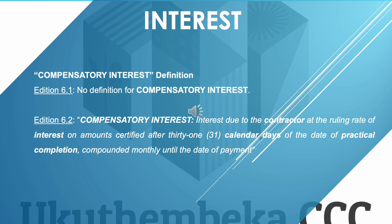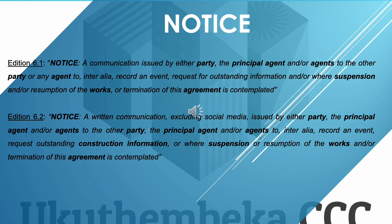Compensatory interest was also not used in Edition 6.1 but is used in Edition 6.2. The definition reads: 'interest due to the contractor at the ruling rate of interest on amounts certified after 31 calendar days of the date of practical completion, compounded monthly until the date of payment.' Default interest therefore relates to payment, while compensatory interest relates to certified amounts after practical completion.